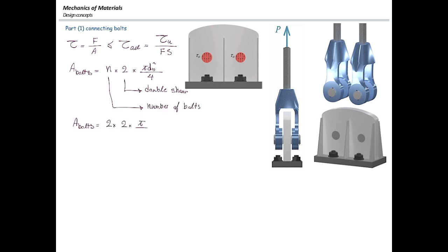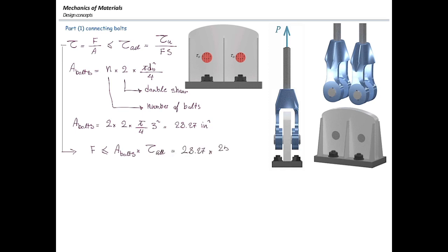The diameter is given as 3 inches. Based on that, the area would be 28.27 square inches. Plugging that back into the design equation, force is limited to area of bolts multiplied by allowable stress. The yield stress for the bolt is 25 KSI and the required factor of safety is 3, so the limiting force equals 235.6 kips.